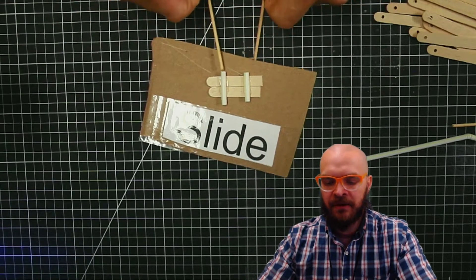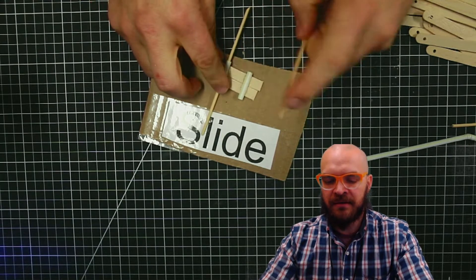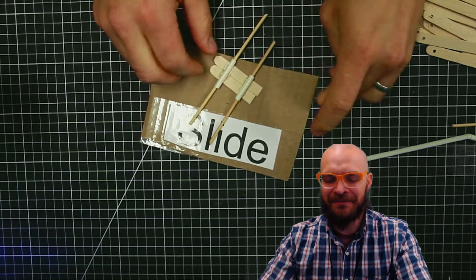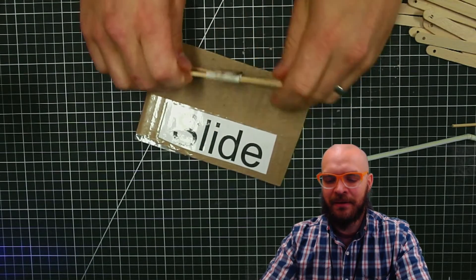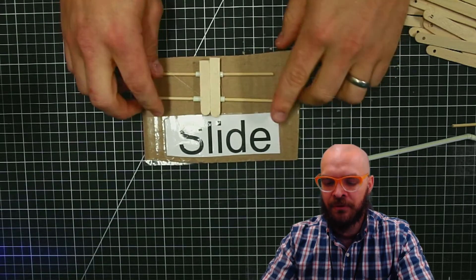Next step in our slide is we're going to put these skewers in those two popsicle sticks. They're still cooling down. And the last step is simply to glue those down.